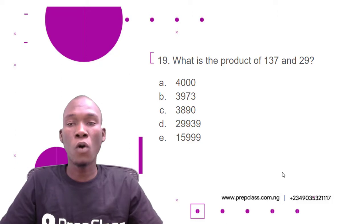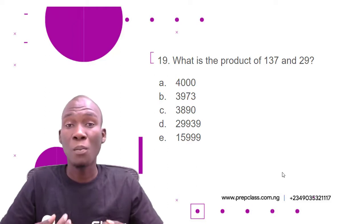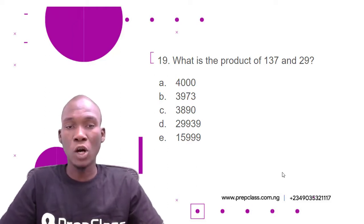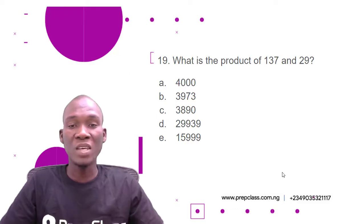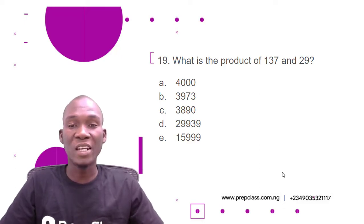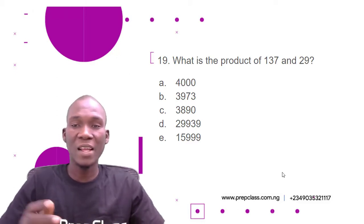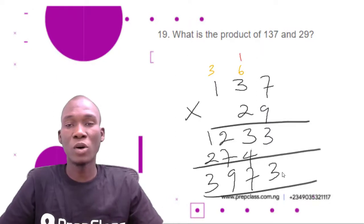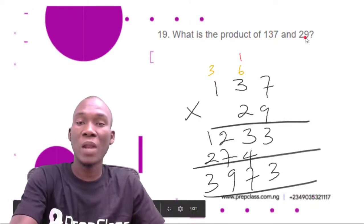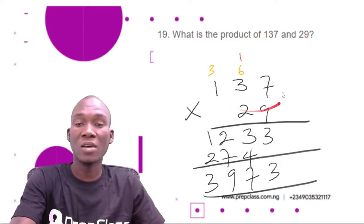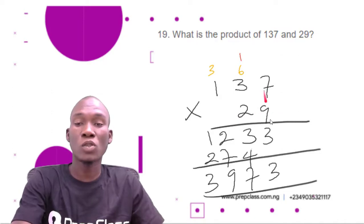Question 19: What is the product of 137 and 29? Remember, product means multiplication. The options are: A) 4,000, B) 3,973, C) 3,890, D) 29,939, E) 15,999. We write out 137 multiplied by 29 and begin multiplying from the rightmost column. 9 multiplied by 7 is 63; write 3 and carry 6.